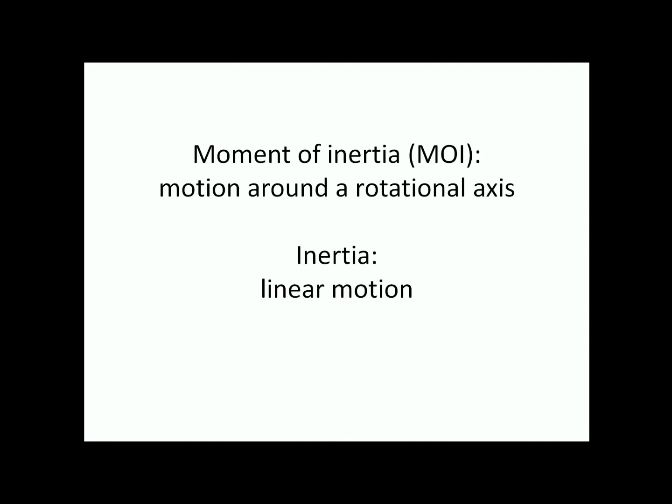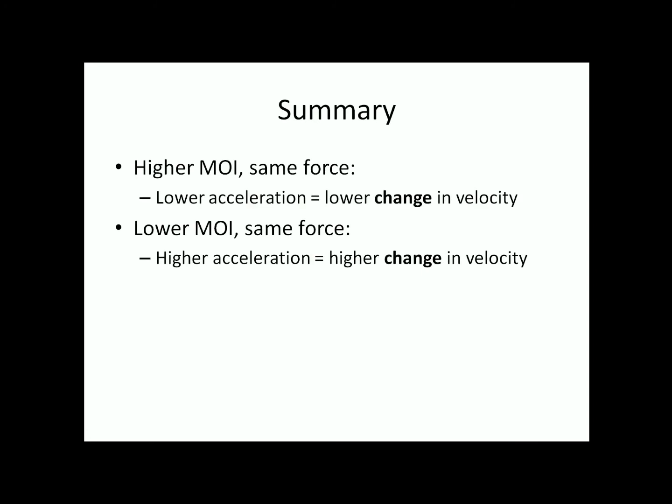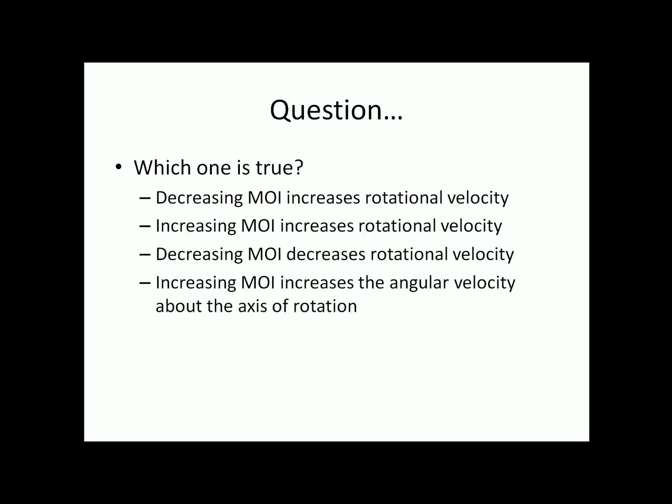You might see these terms in textbooks: rotational axis motion and linear motion — they mean essentially the same thing. Here's a quick summary: if you have a higher moment of inertia and the same force, you'll have a lower acceleration. If you have a lower moment of inertia and the same force, you'll have a higher acceleration. Now, coming to the question — which one of these statements is true? Pause the video and see if you can come up with the answer.